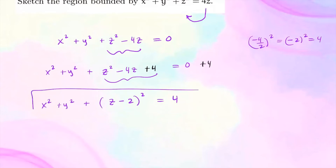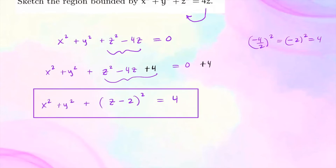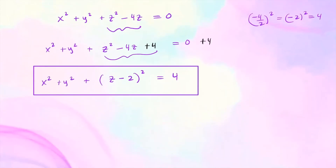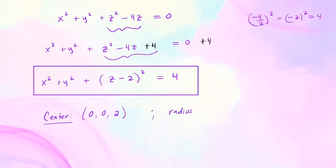So there we have it — this is now in standard form. We can identify the center of this sphere as (0, 0, 2): x-coordinate is 0, y-coordinate is 0, and z-coordinate is 2. The radius is the positive square root of 4, which is 2. So this is a sphere that's been shifted upward in the z-direction by 2 units.